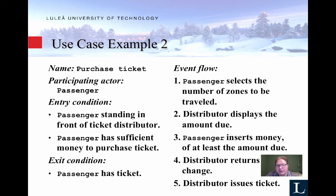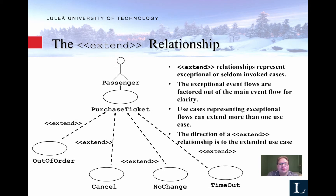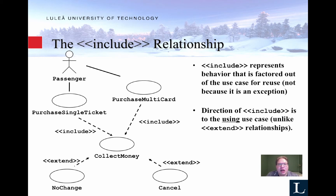There are some special cases that might result in not getting the ticket — you can add those as labels, like special conditions such as the machine being out of order or having no change. You can also have special exit conditions. In the diagrams you have extend relationships to express these special conditions — for example, timeout, no change, cancel, or auto order can extend the purchase ticket use case. Note the direction of the arrows. You also have an include relationship where you reuse functionality — both 'purchase single ticket' and 'purchase multi-card' use cases include 'collect money' because both use the same sub-use case.